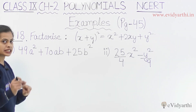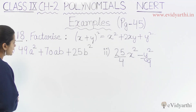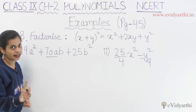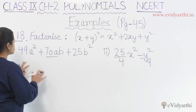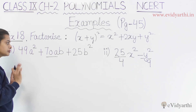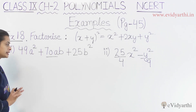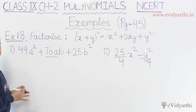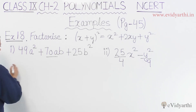Now we are going step by step. We will identify our extreme terms first, then the middle term. So what is the first term? It is 49. And 49 means 7 squared.